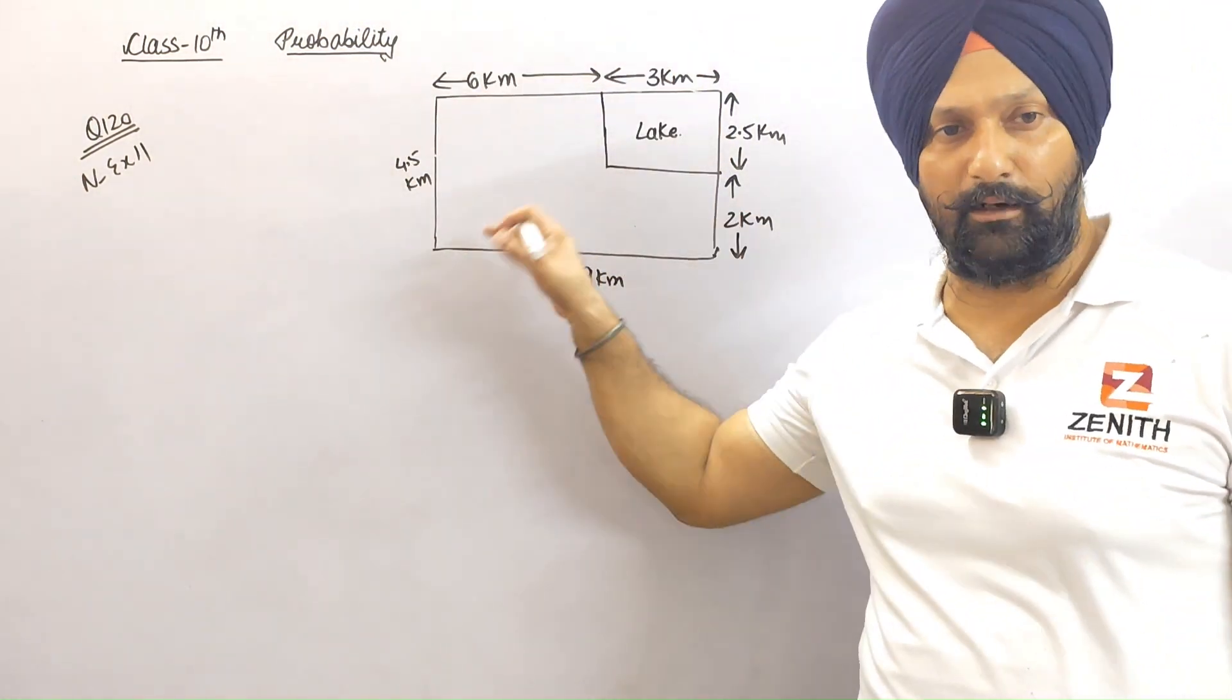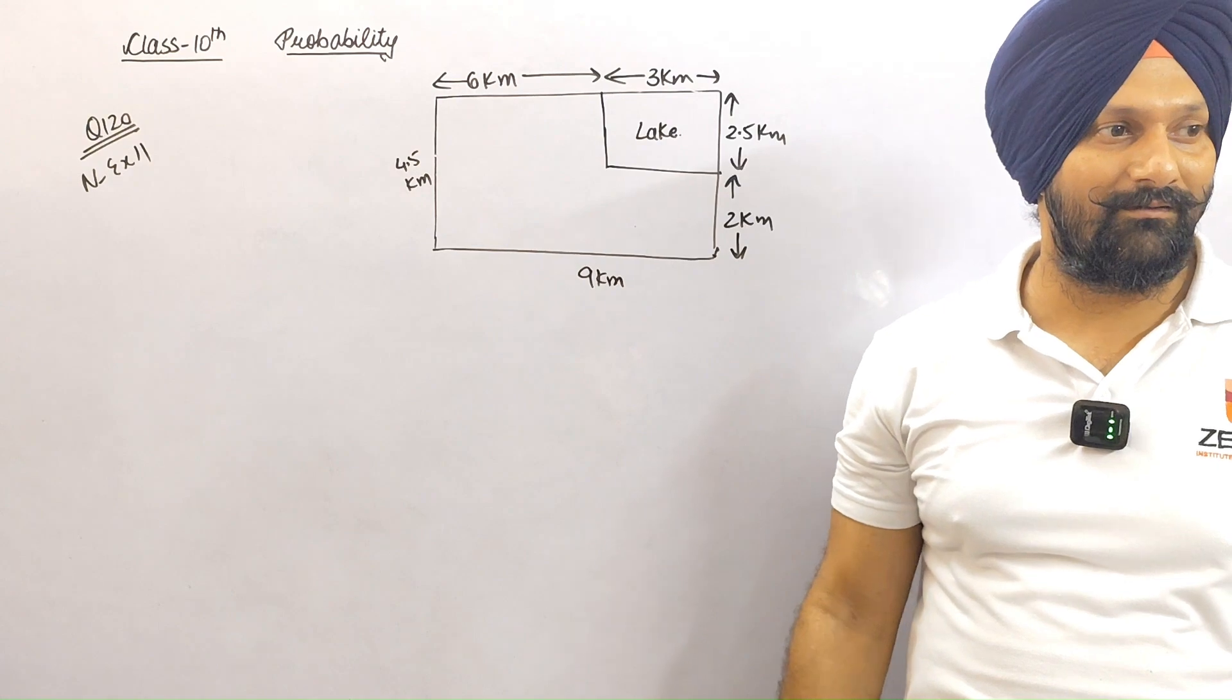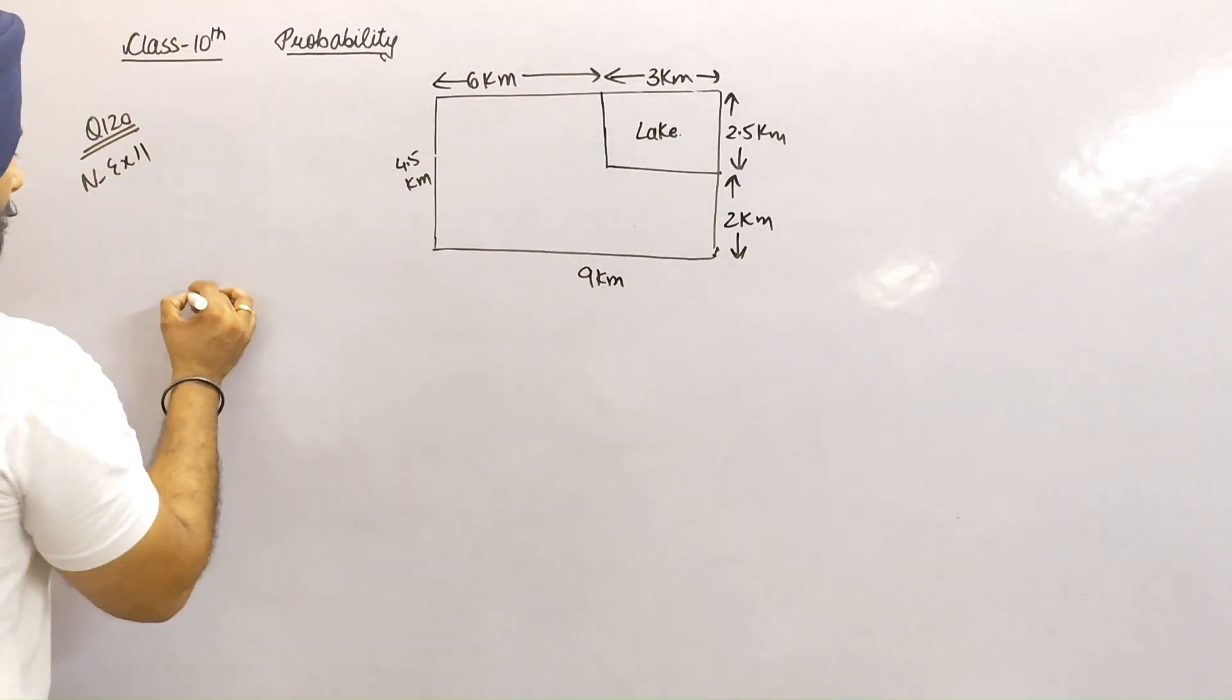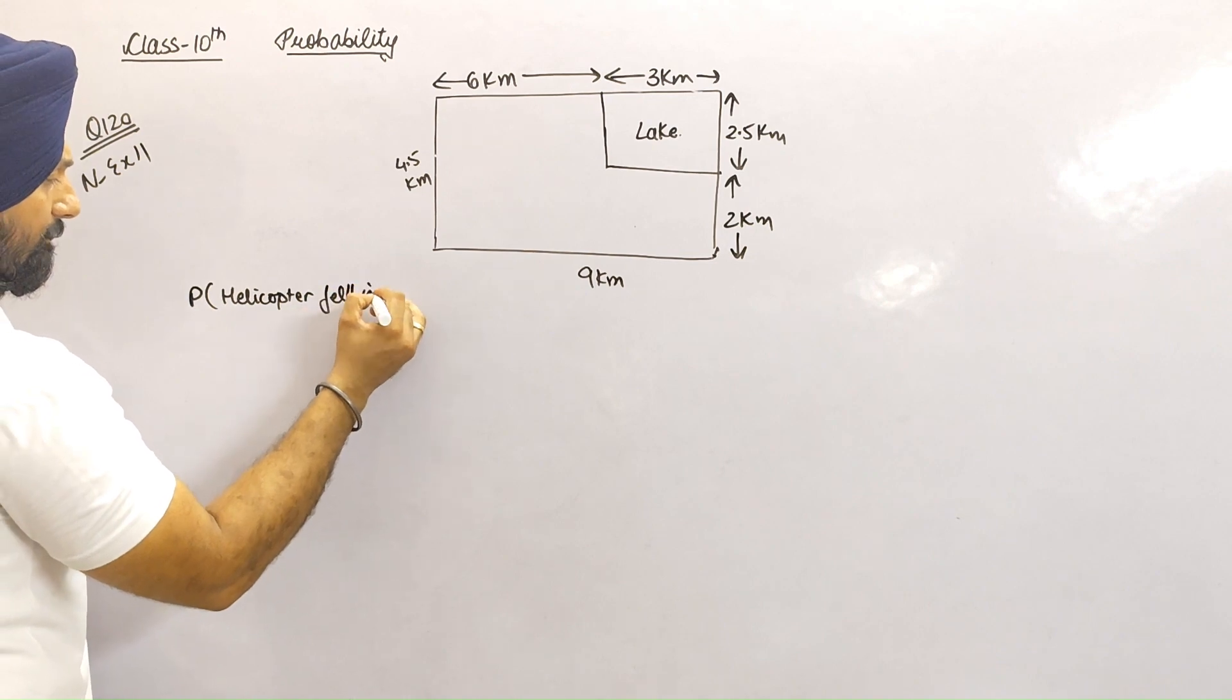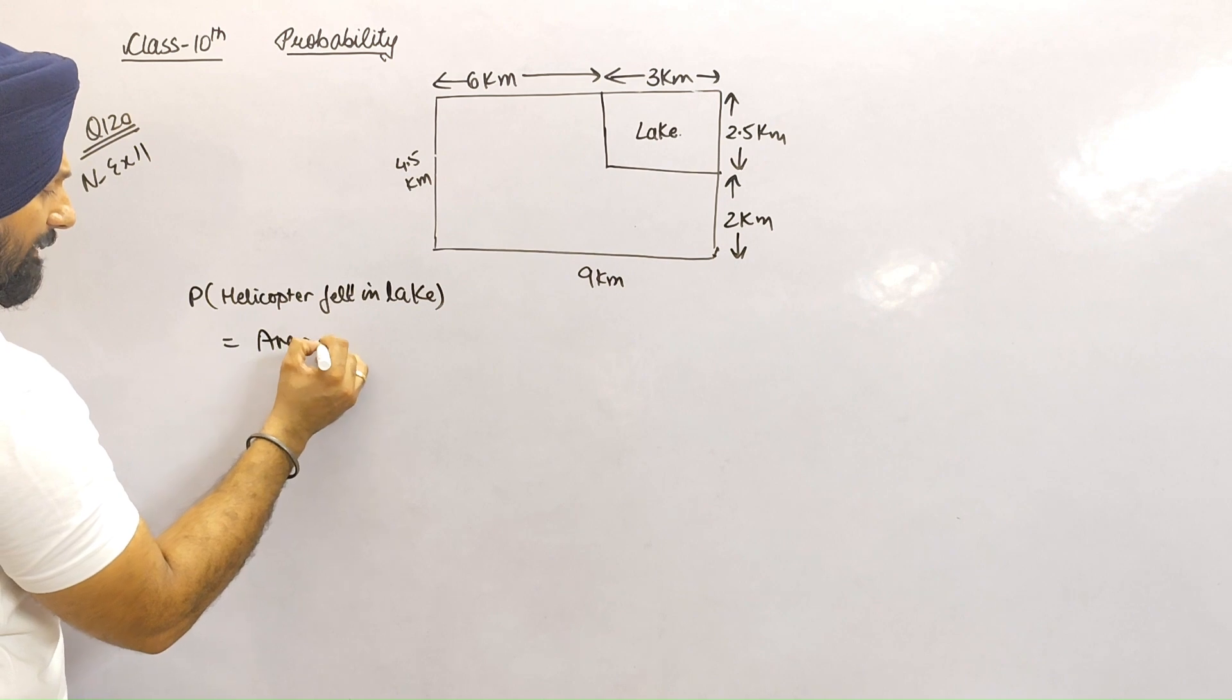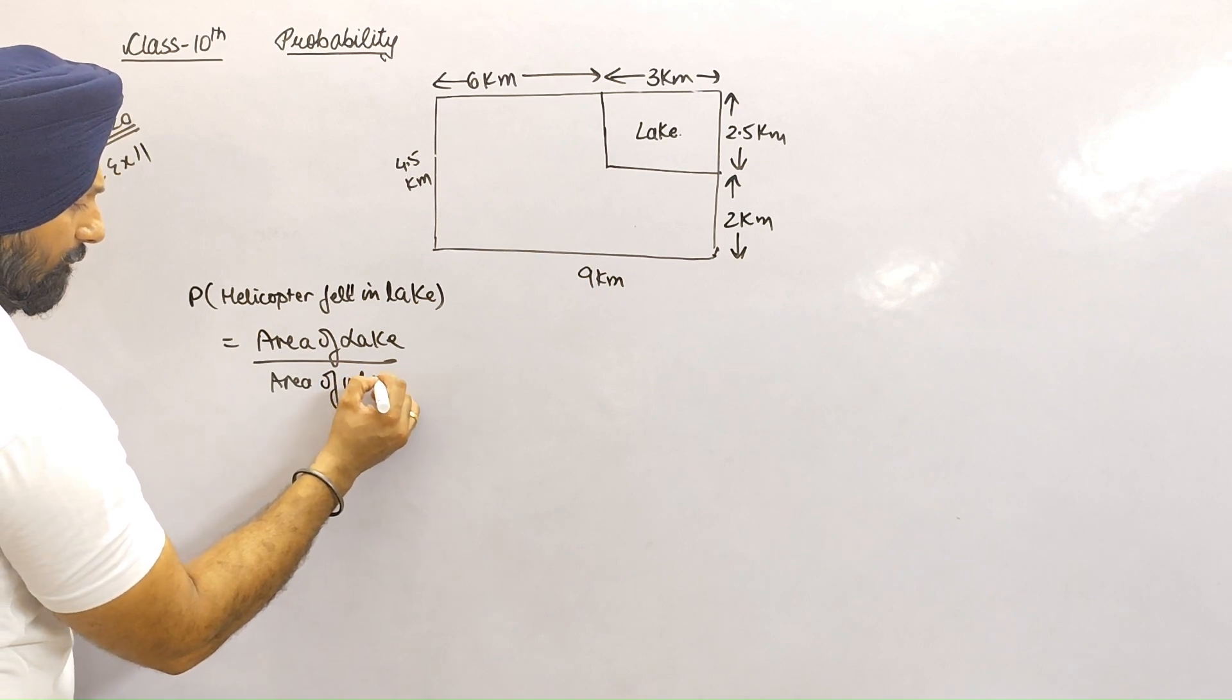The helicopter is missing somewhere in the entire area. The probability that the helicopter fell in the lake is equal to the area of the lake divided by the area of the whole field.